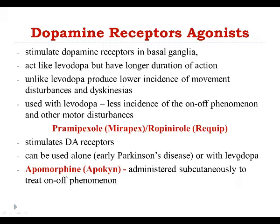The next group is called dopamine receptor agonists. These drugs have the ability to enter the brain and stimulate dopamine receptors in the basal ganglia.